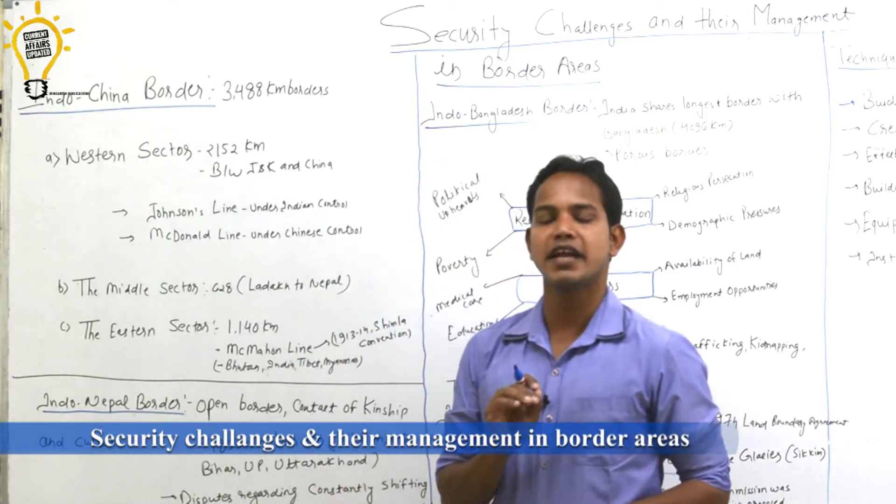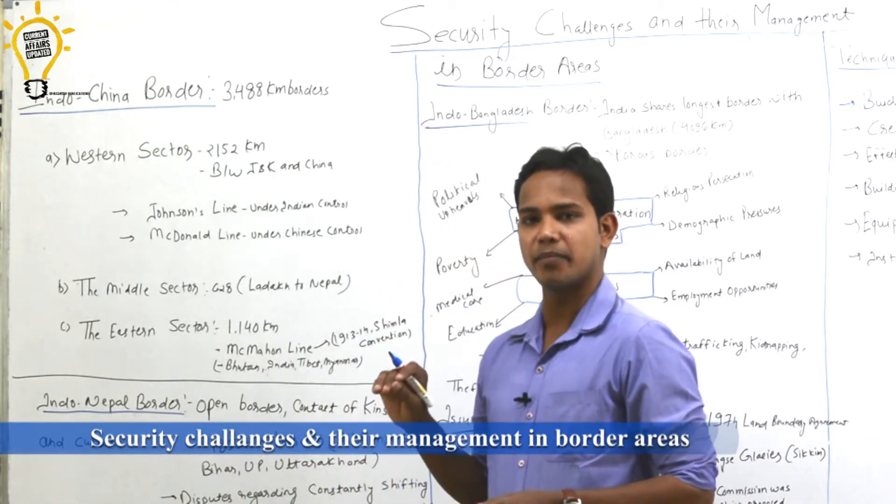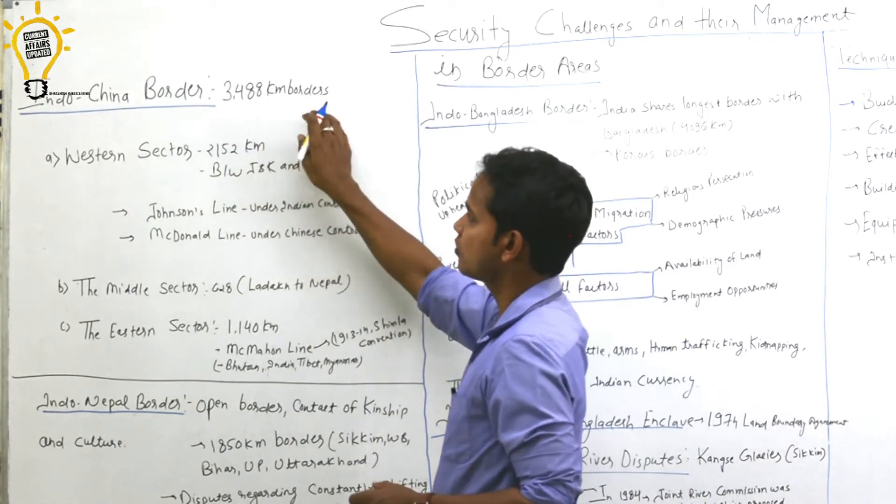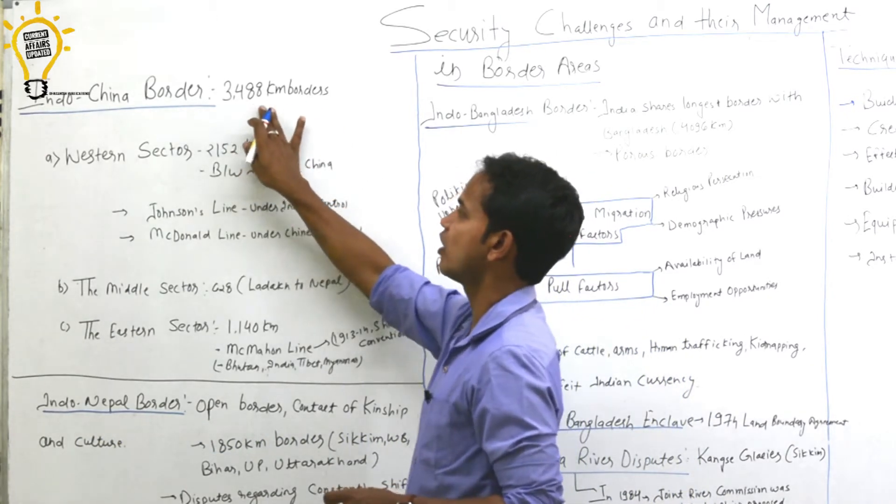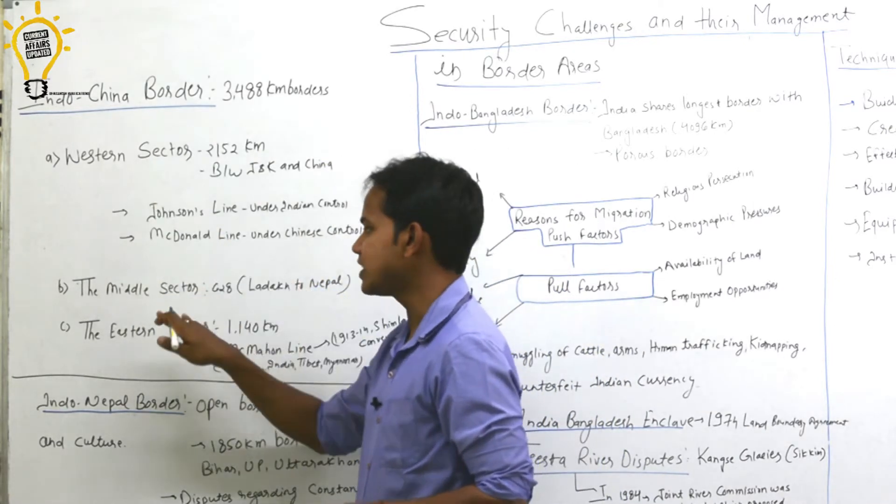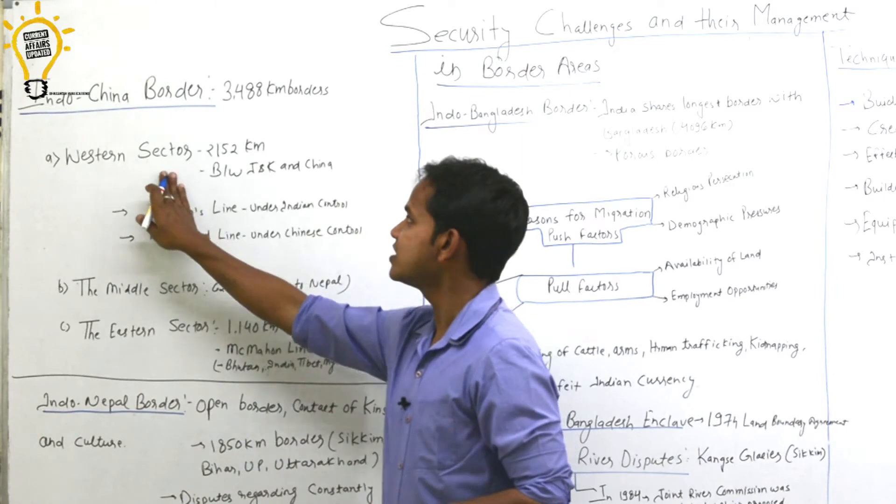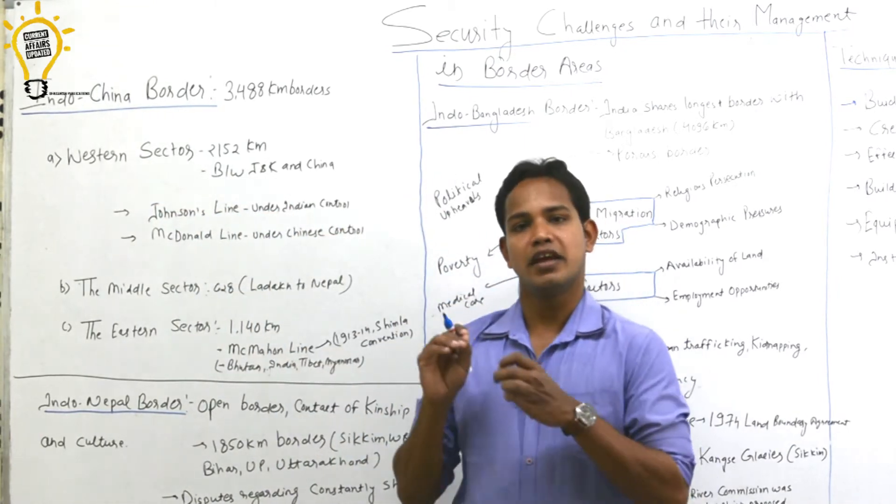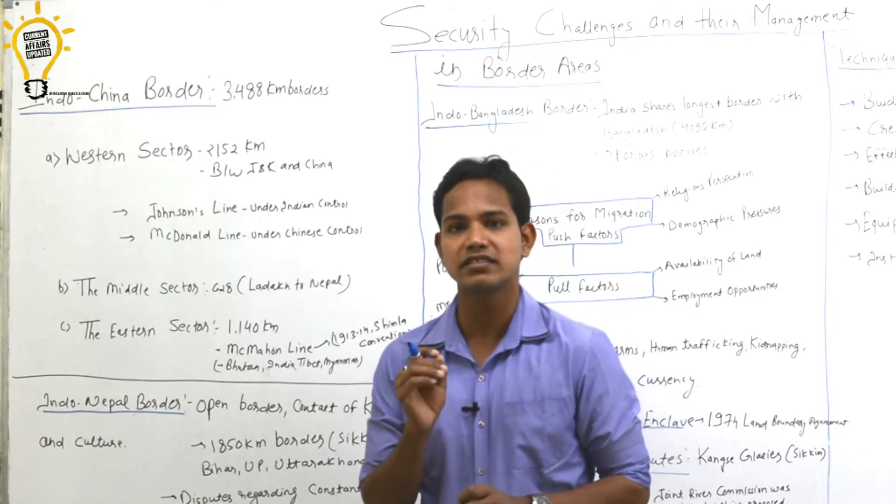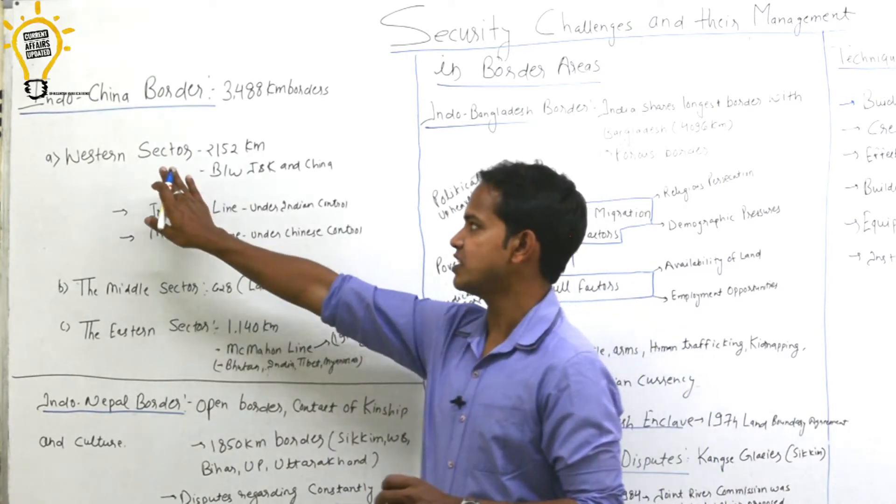Indo-China border is distributed in two particular areas. We have Indo-China border which is around 3,488 km long. We have three parts: western sector, middle sector and eastern sector. Western sector is exclusively Jammu Kashmir, India's part is called China border which is Aksai Chin. That is western sector.